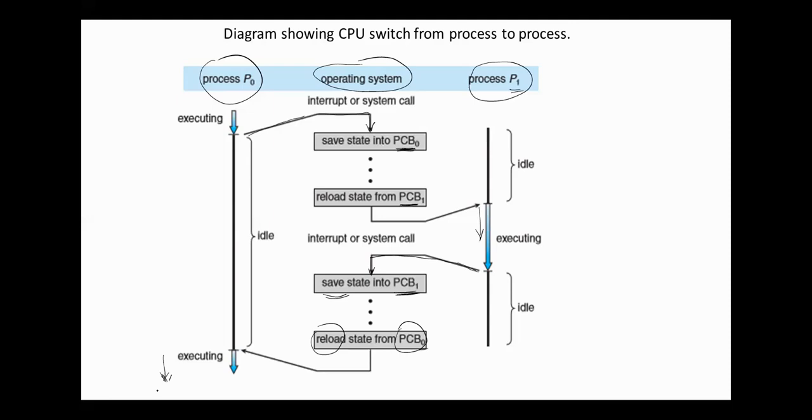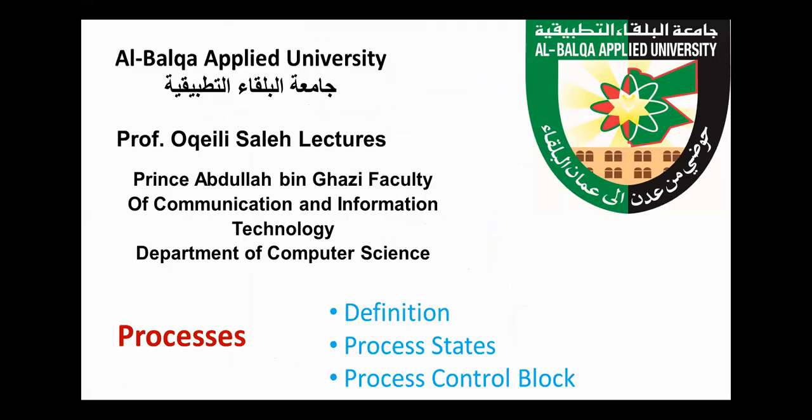So in switching from one process to another, the operating system saves all the information of the old process in its process control block and loads the information for the new process from its process control block. For today, that's all. Thank you.